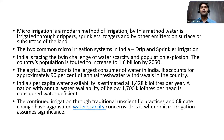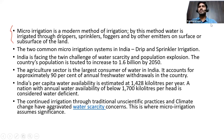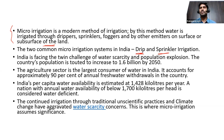Micro irrigation is a modern method of irrigation by which we deliver water to crop plants through drippers, sprinklers, foggers, or other emitters on the surface and subsurface of the land. The two most common micro irrigation systems in India are drip and sprinkler irrigation. Through drip irrigation, we can save nearly 80 to 90 percent of water and achieve maximum efficiency.